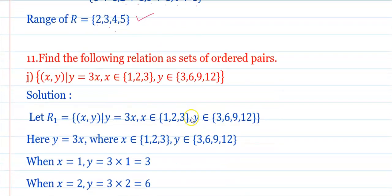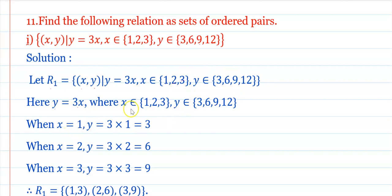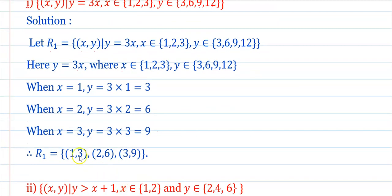Question 10: Find the following relations as sets of ordered pairs. R₁: y = 3x, x ∈ {1,2,3}, y ∈ {3,6,9}. When x=1, y=3; x=2, y=6; x=3, y=9. So R₁ = {(1,3),(2,6),(3,9)}.